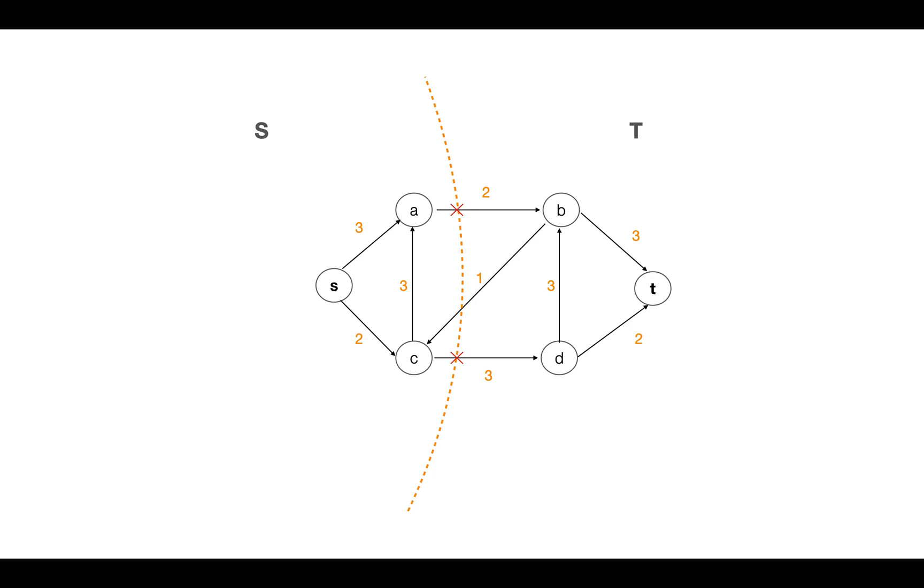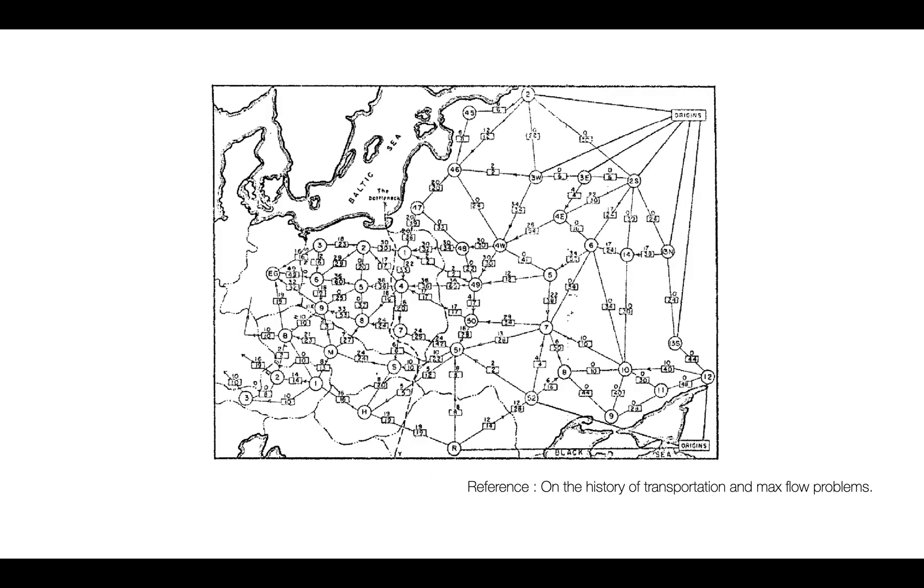Now I'm going to talk about the most famous example from where everything started. This is an example from the 1950s. These are the real rail networks connecting Soviet Union with countries in Eastern Europe. This is a directed graph where the vertices represent cities and the edges represent rail tracks.